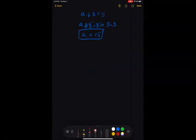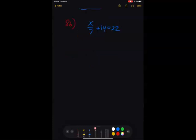So let's do 8b. 8b says x over 7 plus 14 equals 22. First step, we are going to subtract 14 from both sides. Okay, so then these two 14s cancel out. So we only have x divided by 7. Divided by 22.